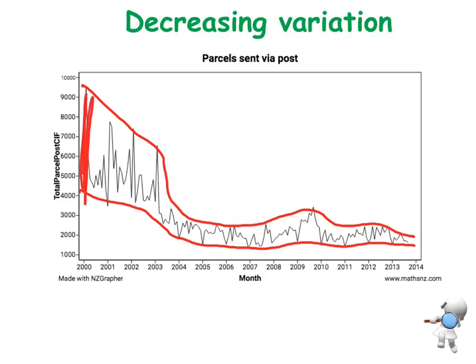So at the beginning in 2000, there's our width. As we get to 2003, it's not quite as wide. 2007, 2008, 2010, 2014. And we can see that that variation in the data is reducing over time.